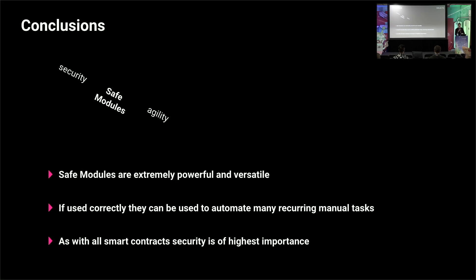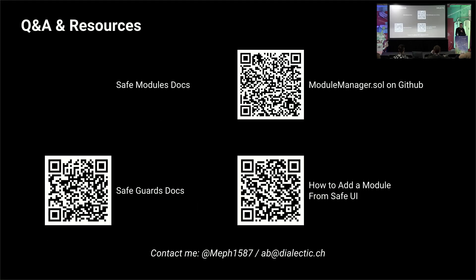The conclusion is that Safe modules are super powerful. They are very versatile and a great balance between security and agility. If you find yourself doing repeated tasks out of a Safe, you may want to think about using modules to automate it. As with all other smart contracts, security is very, very important. There are some more resources — some QR codes disappeared, but there were supposed to be links to the module docs, which you can find by Googling. There's some source code as well, and you can add modules directly from the Safe UI — they have a blog post for that.